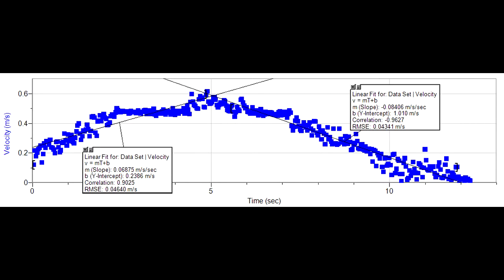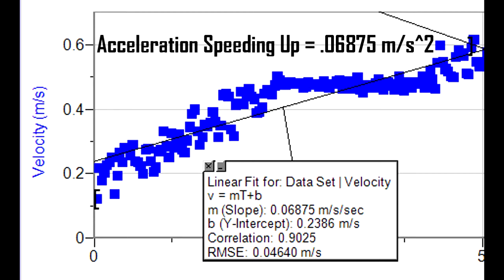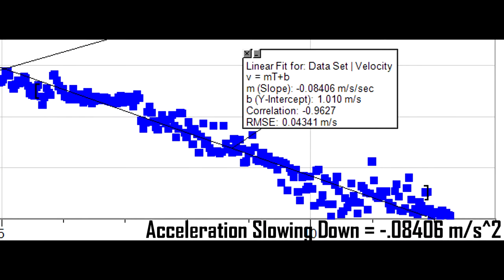This is a graph of the velocity that shows the car speeding up and slowing down. The lines are the slopes of the velocities, which are the two different accelerations. The car's positive acceleration when at its greatest speed is 0.06875 meters per second squared. The car's negative acceleration when decreasing to zero is negative 0.08406 meters per second squared.